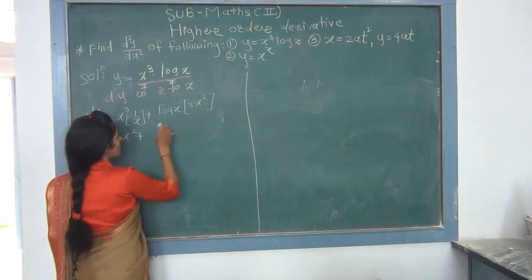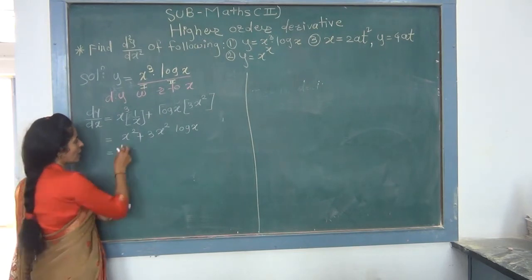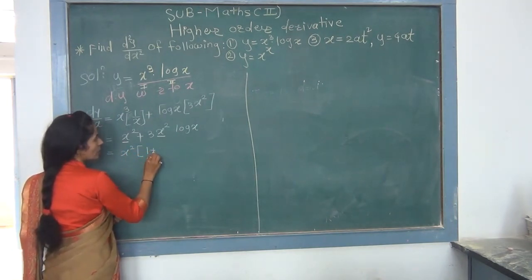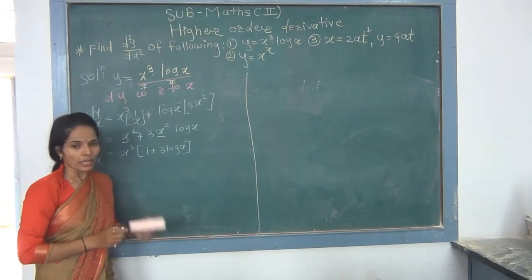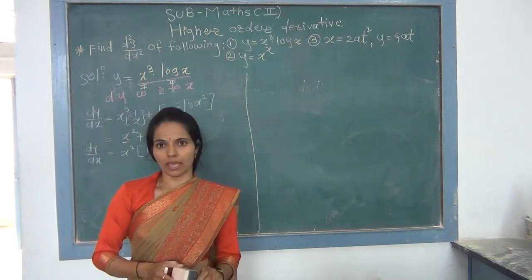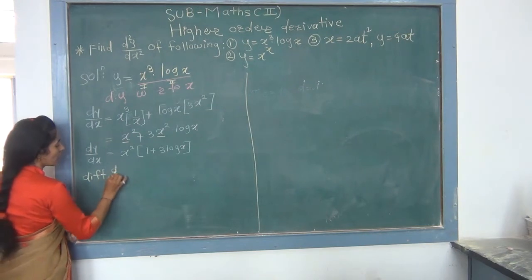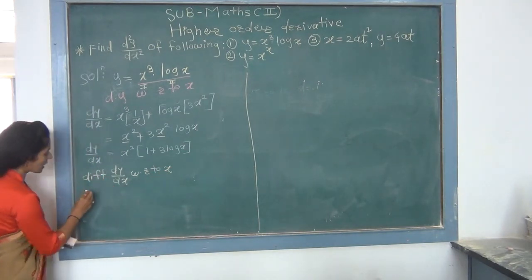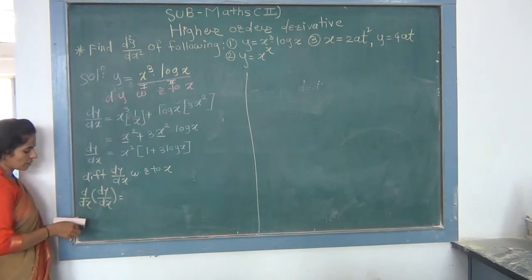Applying the product rule: x² as it is, multiplied by the derivative of (1 + 3·log(x)) — derivative of 1 is 0, and derivative of log(x) is 1/x, so we get 3/x — plus (1 + 3·log(x)) as it is, multiplied by the derivative of x², which is 2x.